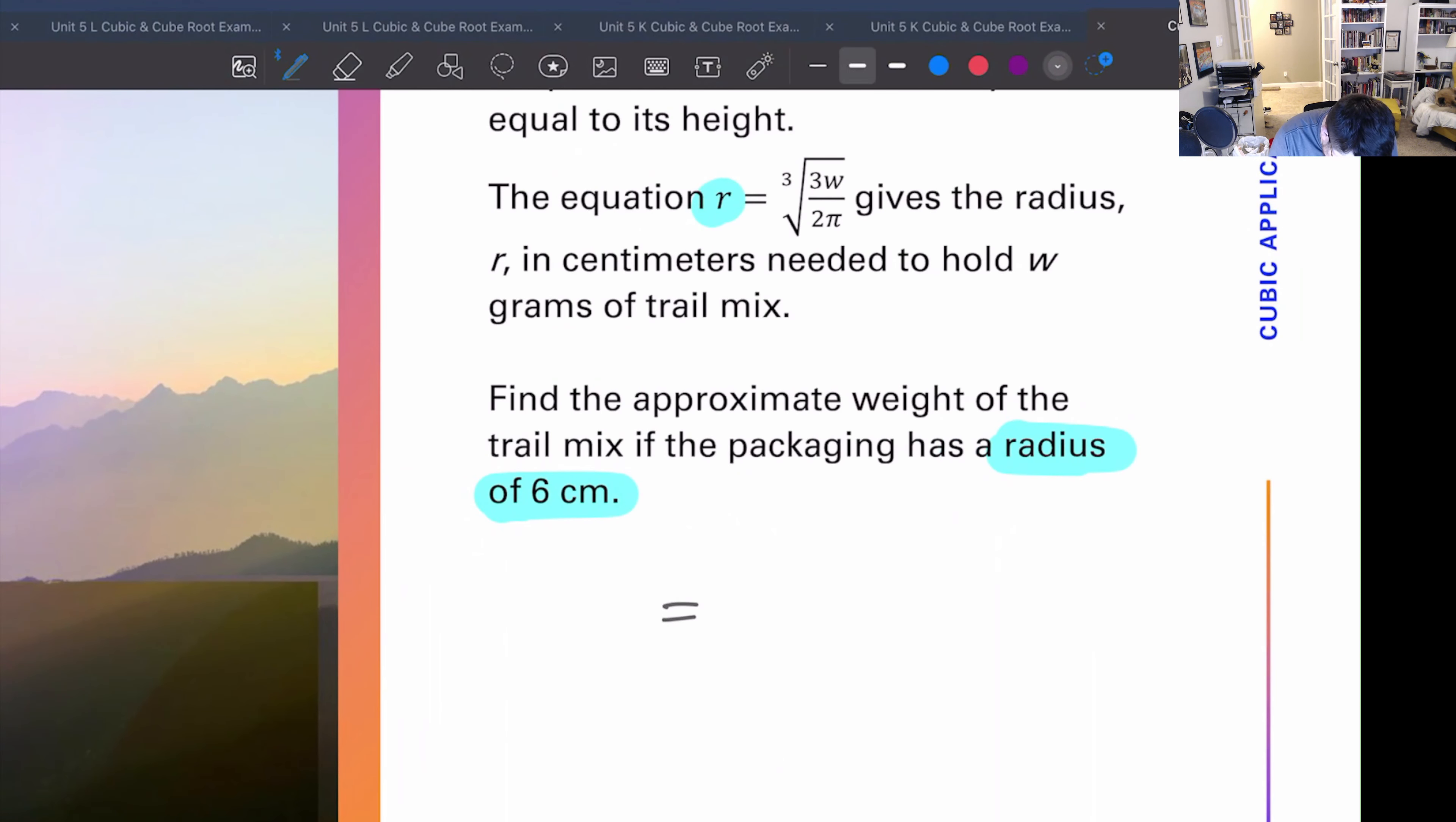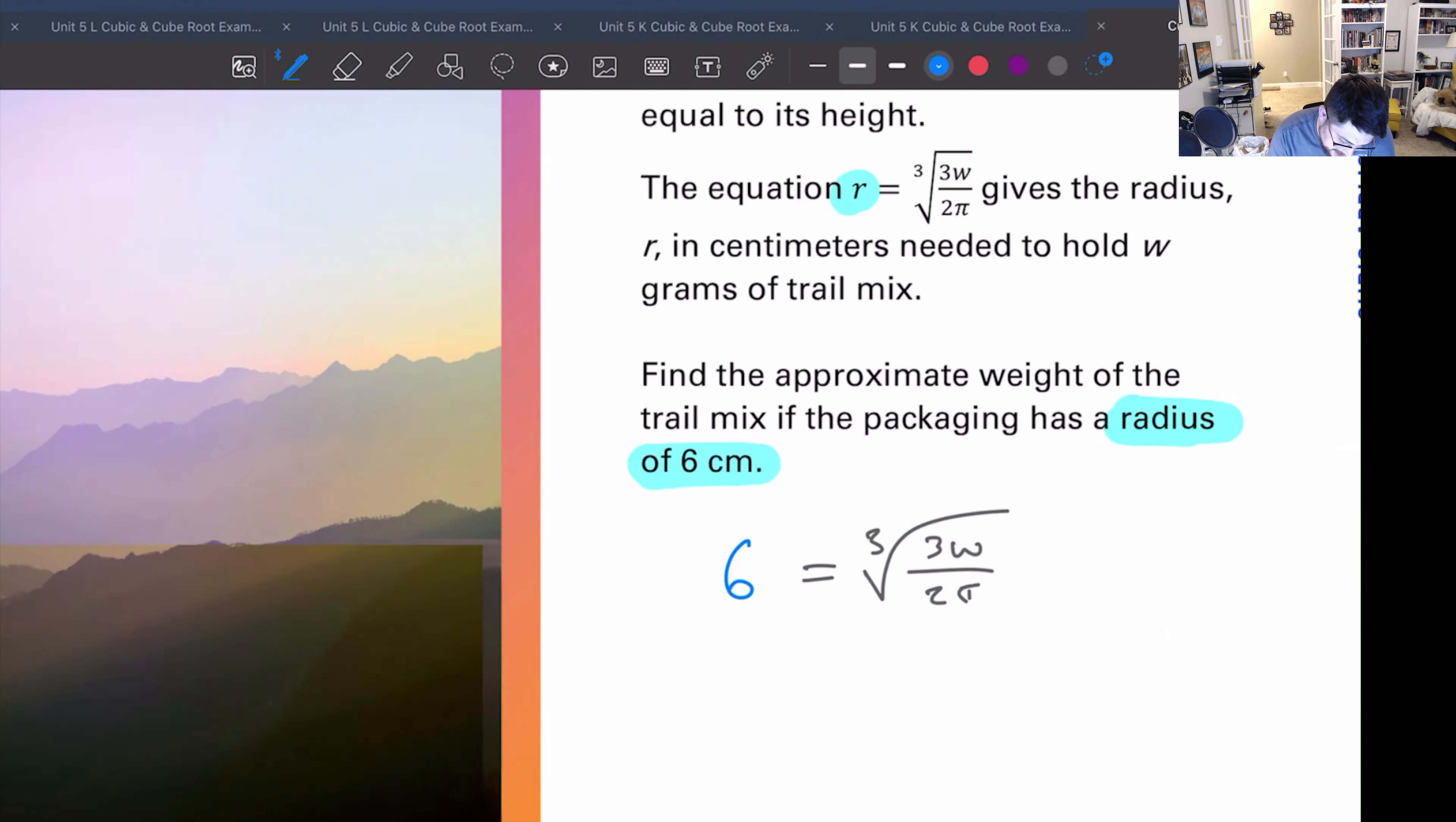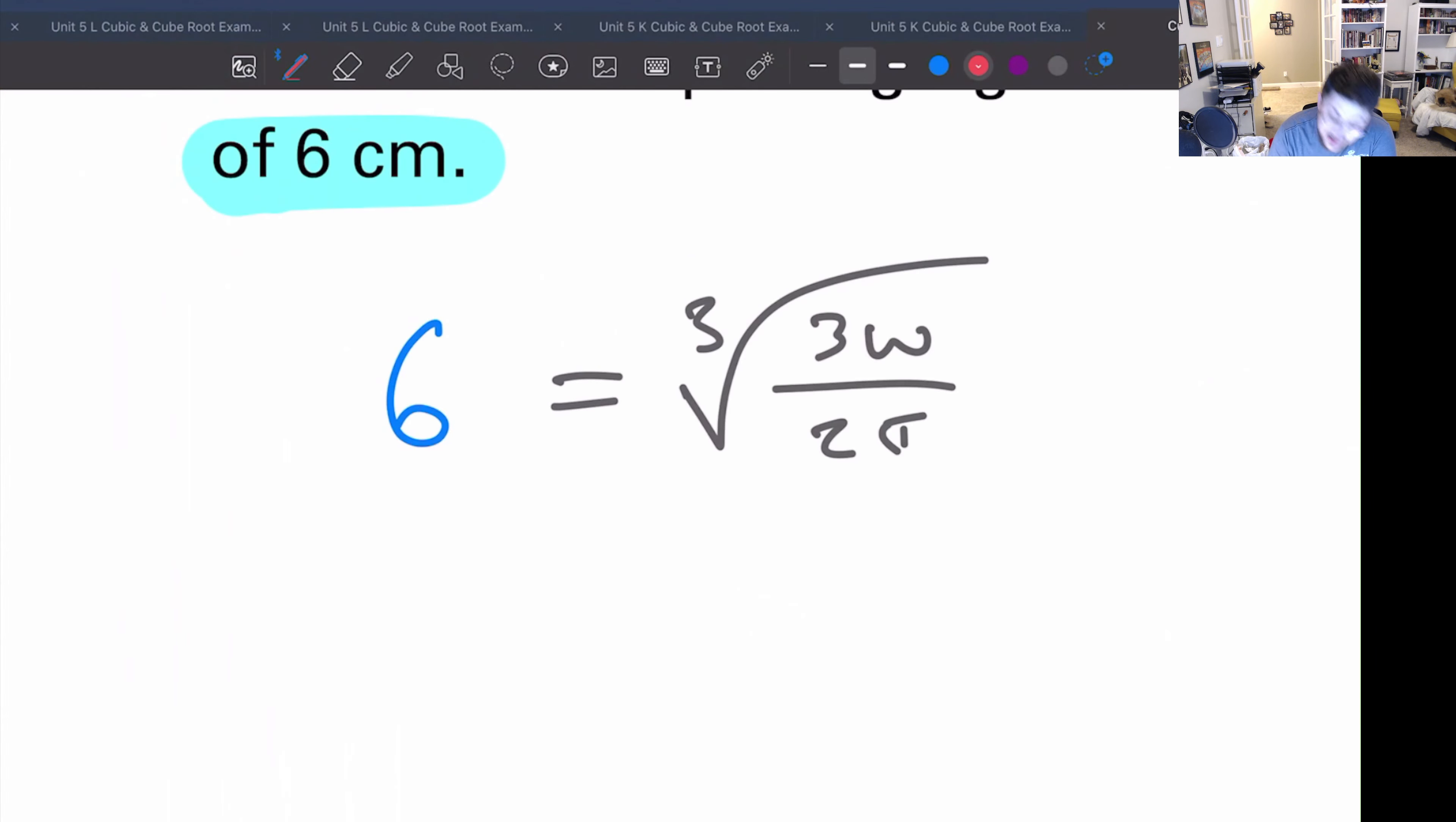Not that much focus, there we go. Not that much, so not the width of an iPhone. Okay, so let's do this. So let's plug this thing in. We have r equals cube root 3w over 2 pi, and we are given six centimeters.